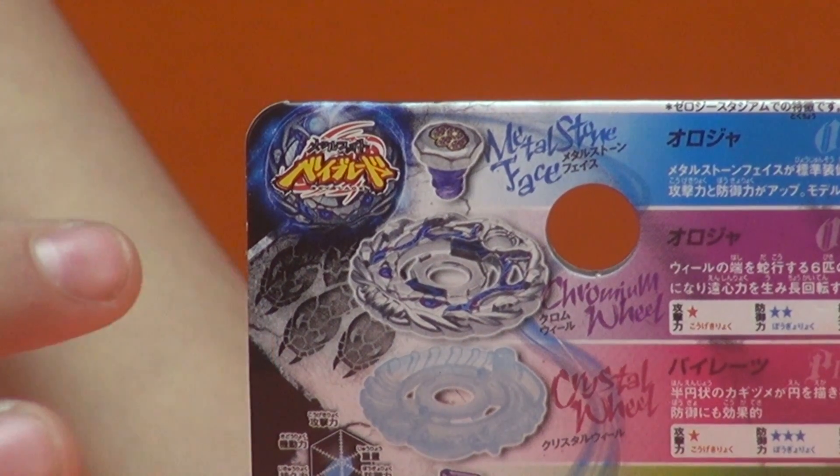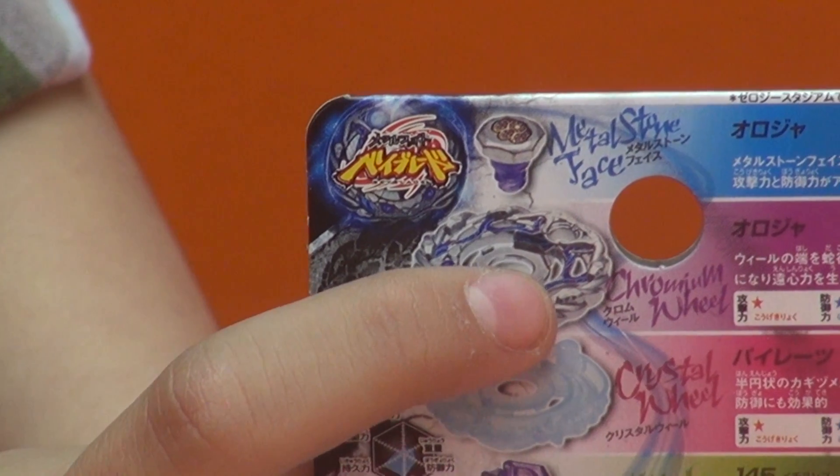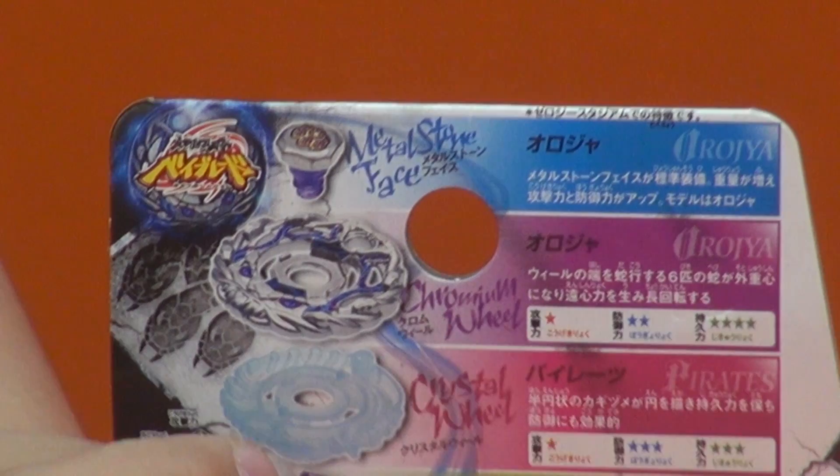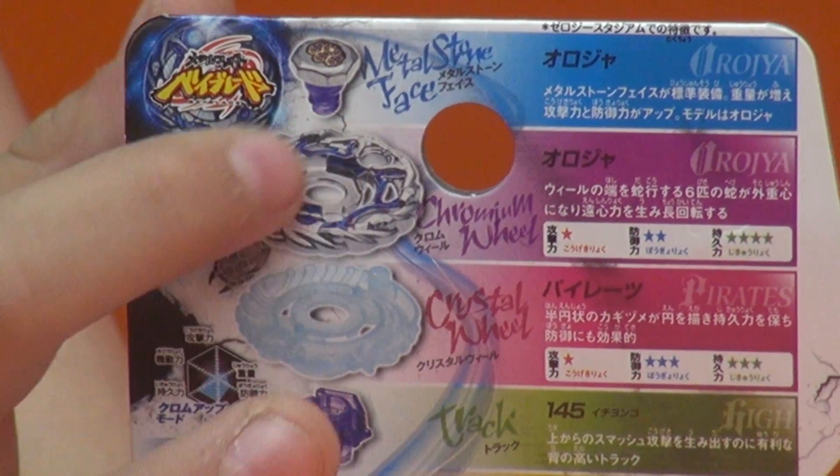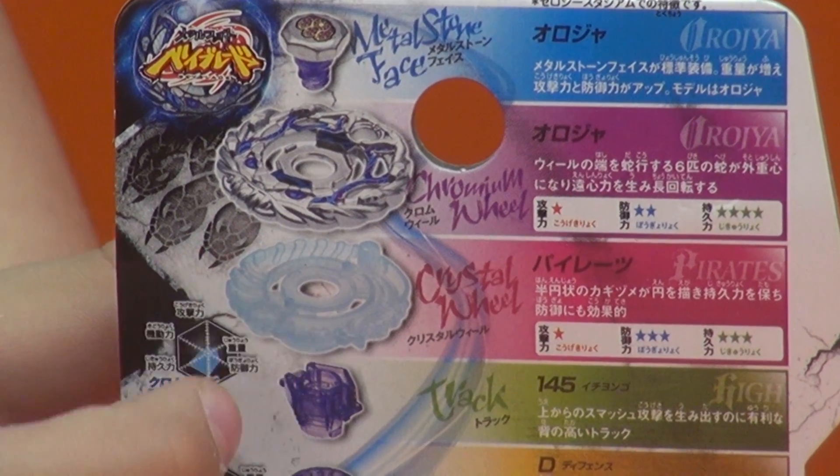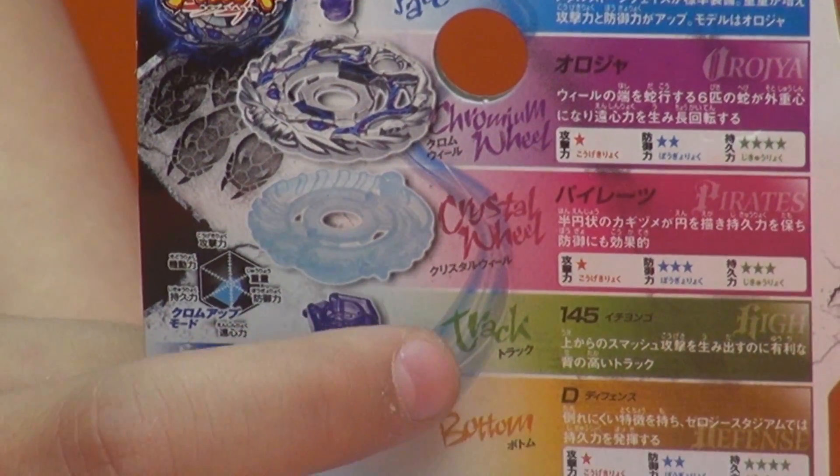So I'll explain to you the parts. It's different for the Zero G because now it's a metal stone face instead of face bolt. This is now called, let me see, because I forgot that it was Chrome Wheel, so it's metal. But this is kind of like the Energy Ring. This is kind of the Fusion Wheel part. It's called the Crystal Wheel. That's how it got the name. And this is the track, which is 145, and the tip is D.